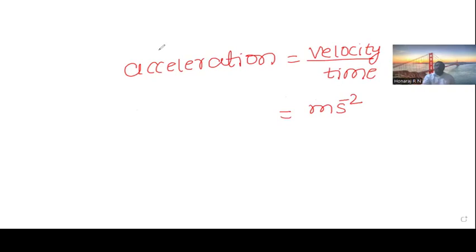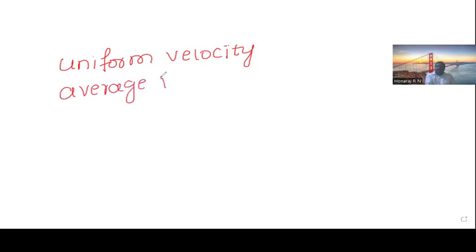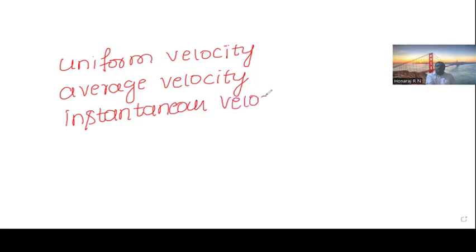Now we need to know about uniform velocity, average velocity, and instantaneous velocity. Uniform velocity is when the velocity of a given object starting to end is same. That we call uniform velocity.